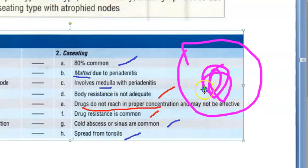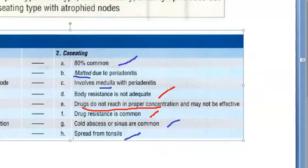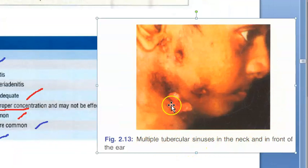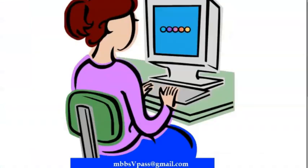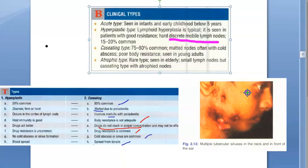Cold abscess and sinus formation can occur from the caseating necrosis, which leaks to form a sinus tract. Here they are showing multiple tubercular sinuses in the neck in front of the ear. Acute type is seen in infants and children. Hyperplastic type shows cortex involvement with discrete mobile lymph nodes. Caseating type shows matted lymph nodes with cold abscess and poor body resistance, seen in young adults.